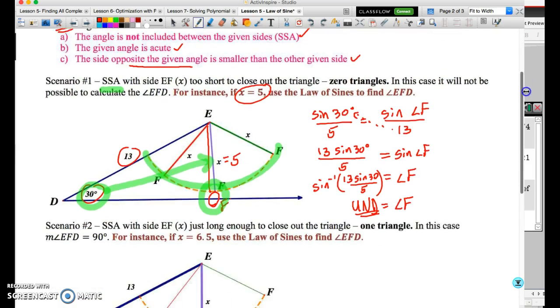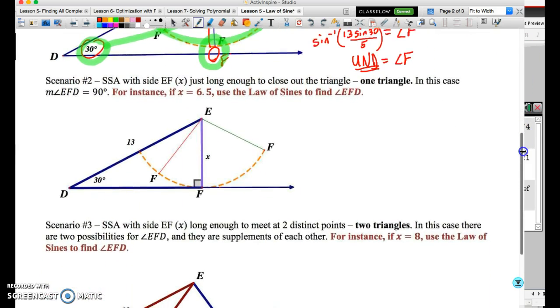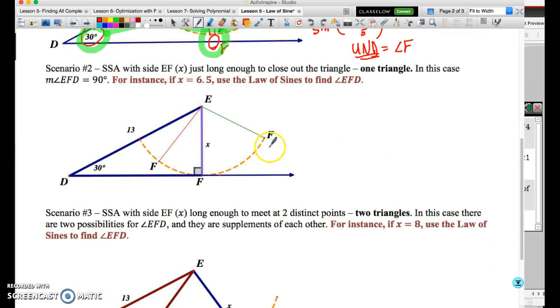This is the first scenario that could occur under the ambiguous case of the law of sines, which of course requires three things before we have to consider whether it's ambiguous. So let me show you the second scenario. What you'll find is that the given information changes only slightly. In this scenario, we've got angle F, the side opposite is 13, here's 30 degrees, the side opposite is X. And in this particular case, we're going to do the calculation with 6.5. Obviously, this diagram is already complete. It shows that we're going to get a 90 degree angle.